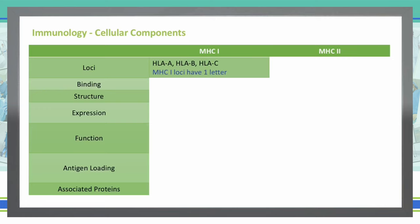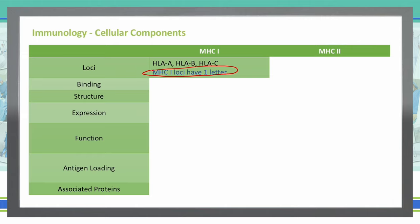With MHC1, the loci are going to be HLA-A, B, and C. When we compare that to MHC2, you will see that there is one distinguishing factor — MHC1 loci have one letter. That's one way you can easily remember this: if there is one letter — HLA-A, HLA-B, HLA-C — then that is an MHC1 component.